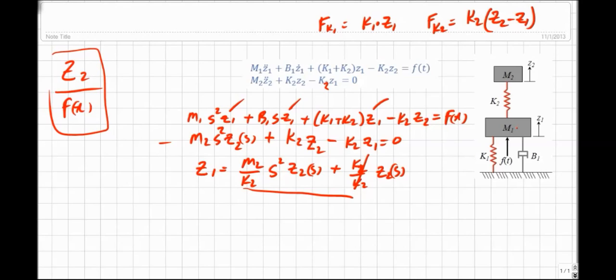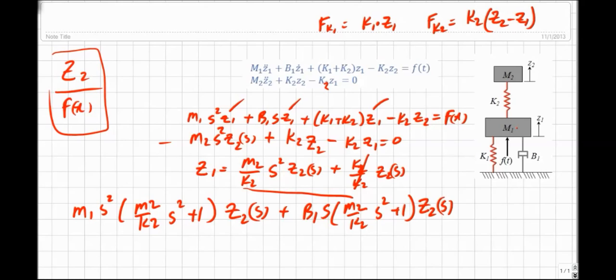Well, here it is. Let's write it out anyhow. I can say that, and I'll start over here. M1 S squared times M2 over K2 S squared plus one times Z2 of S plus B1 S times that same thing again, M2 over K2 S squared plus one times Z2 of S. And I'm going to wrap this around, not as in hip hop. You knew that. You don't want me to do hip hop, do you? No. Okay, getting punchy here.